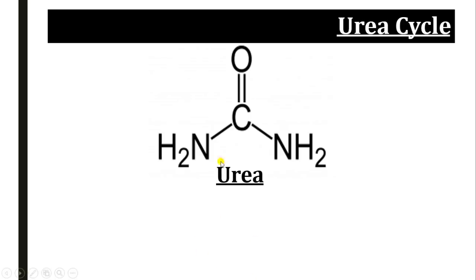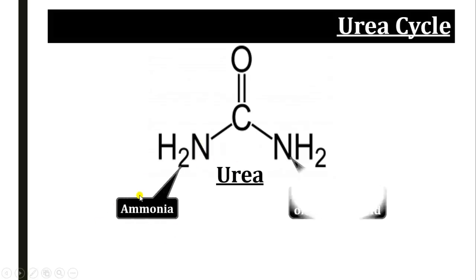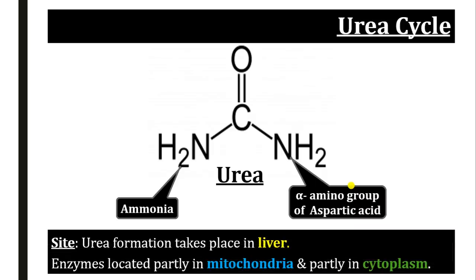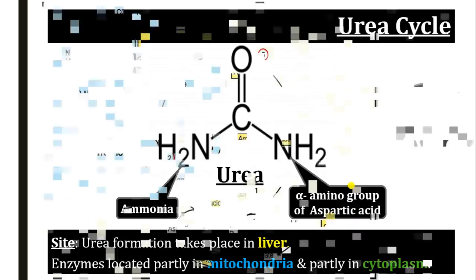In the structure of urea there are two nitrogen atoms that come from different sources. One nitrogen comes from ammonia and the second nitrogen comes from the alpha amino group of aspartic acid, as you will see in the urea cycle pathway. This urea cycle takes place in the liver, and the enzymes of this pathway are partly present in the mitochondria and partly in the cytoplasm.